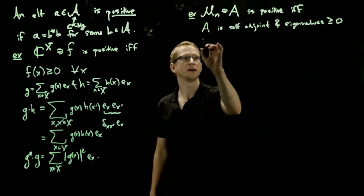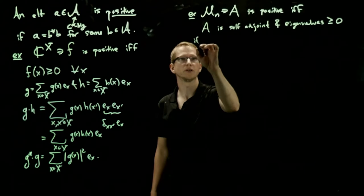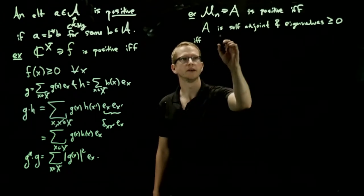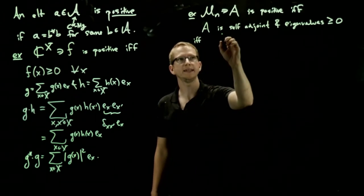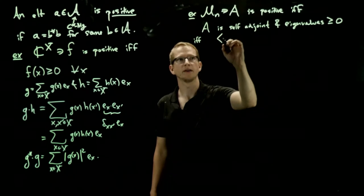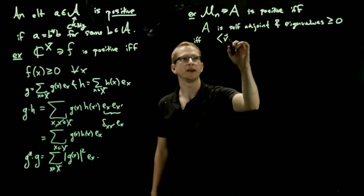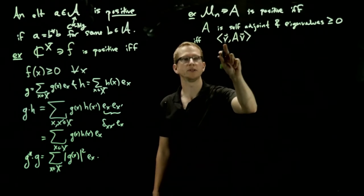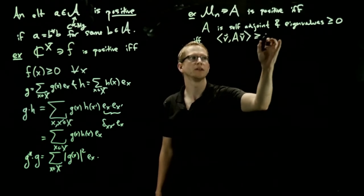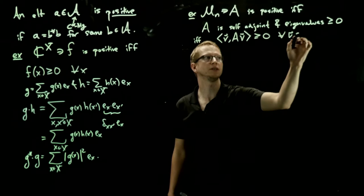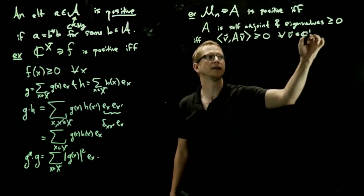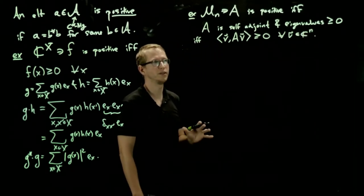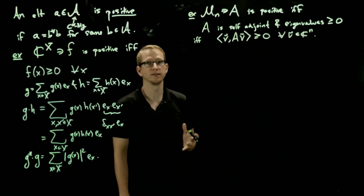Another way, another if and only if, this is also equivalent to saying that if we take any vector V and we apply our matrix A to it, and then we take the inner product with V itself, this will be positive for all vectors V in C^n. So that's another way of thinking about positivity in this example.